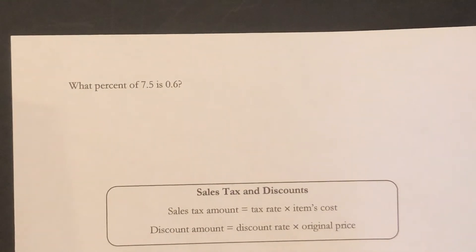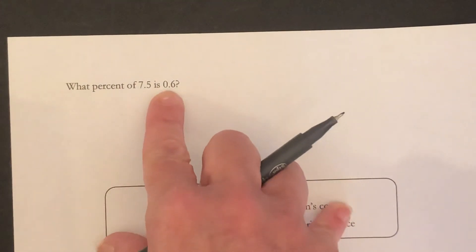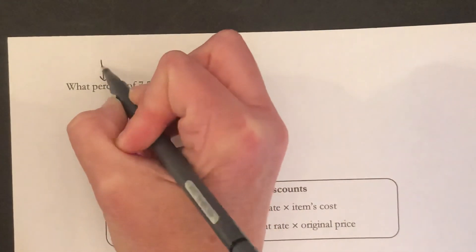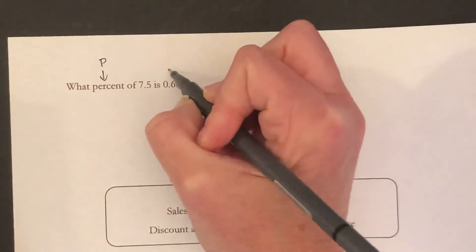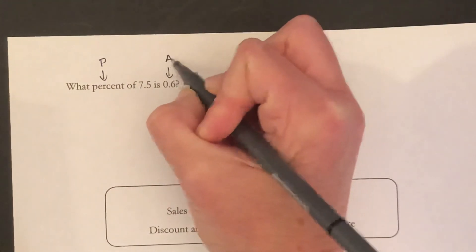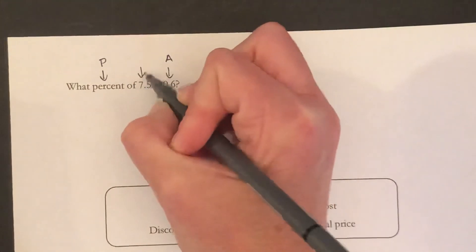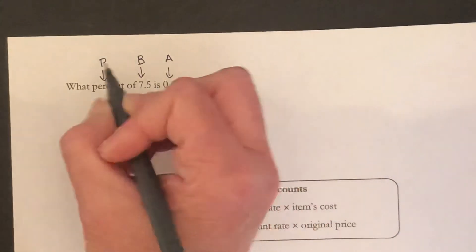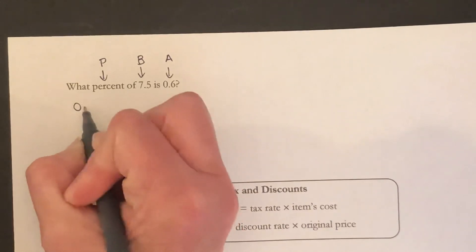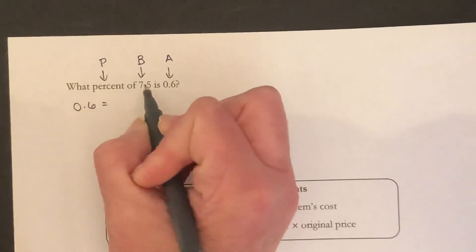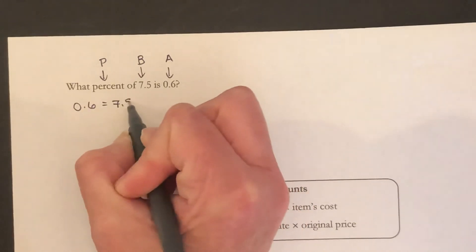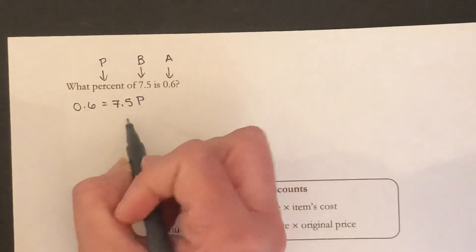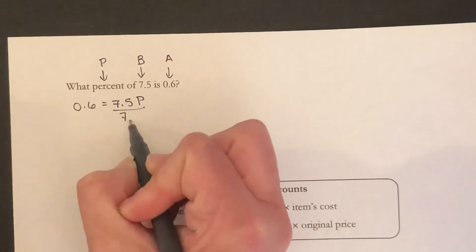One more of these. What percent of 7.5 is 0.6? Again, we're missing the P. So A equals P times B. 0.6 is equal to 7.5 times P. If we divide both sides by 7.5...